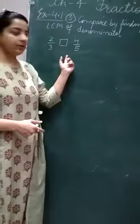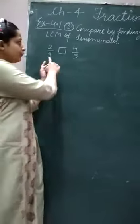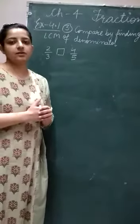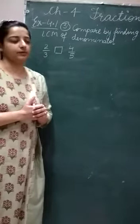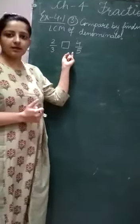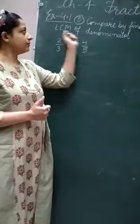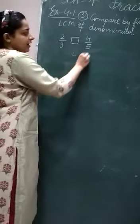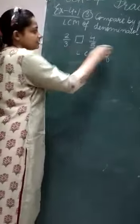Question number 3: compare the fractions by finding the LCM of the denominators. Two fractions are given. Compare means you have to tell which fraction is greater or lesser — we have to put greater than, less than, or equal to. Here two unlike fractions are given, so firstly we have to find the LCM of 3 and 5, because the denominators are 3 and 5.